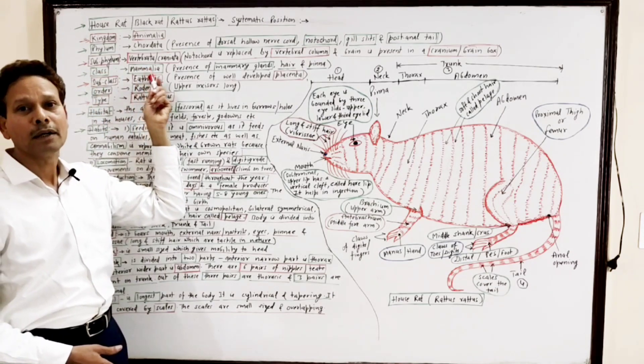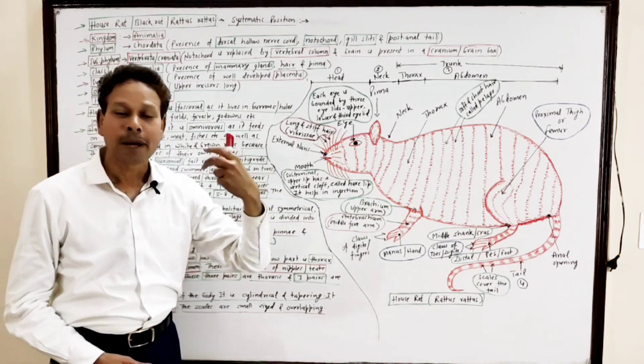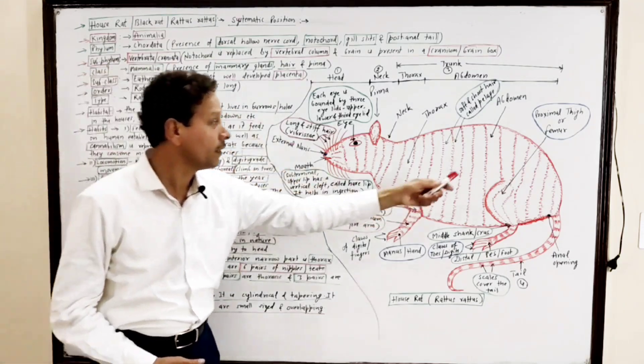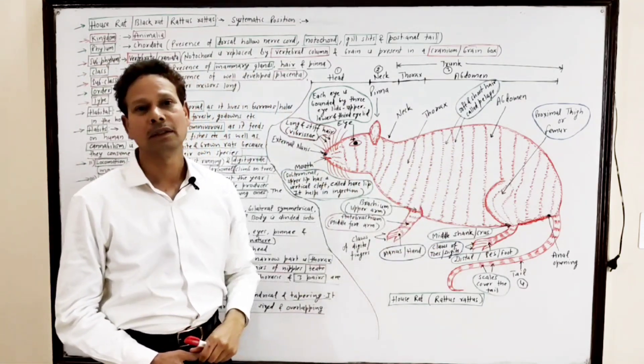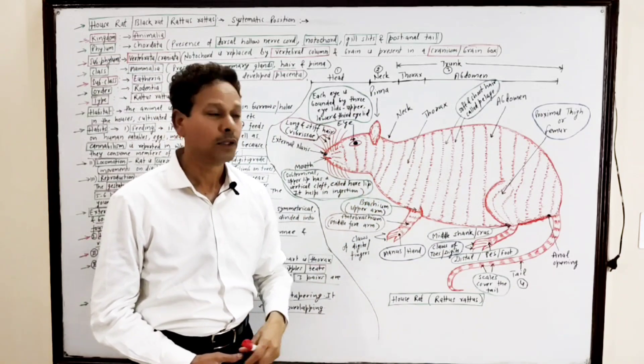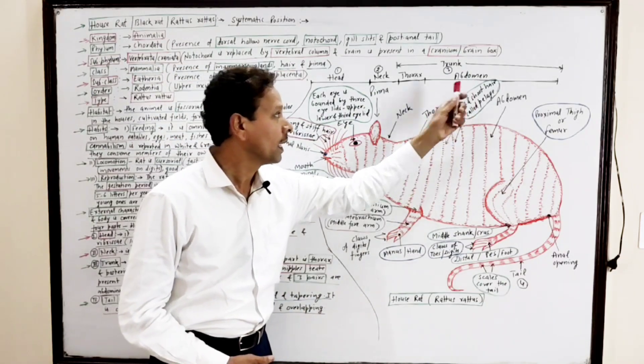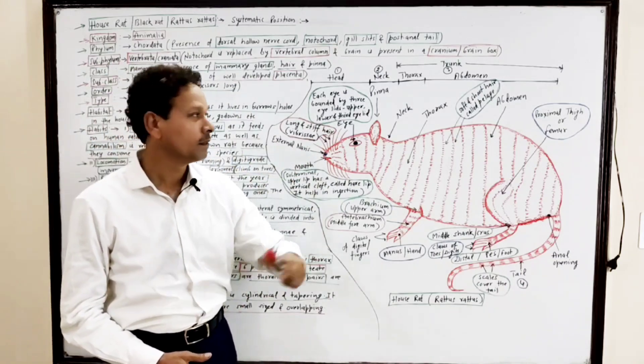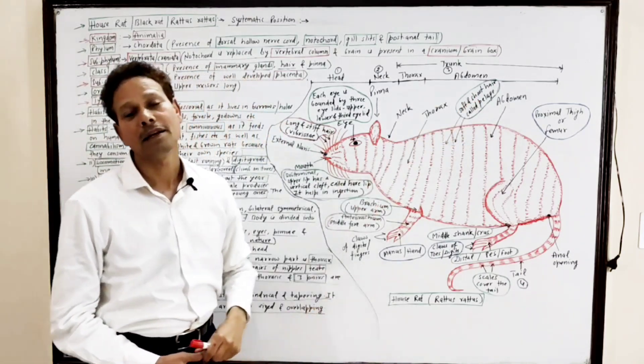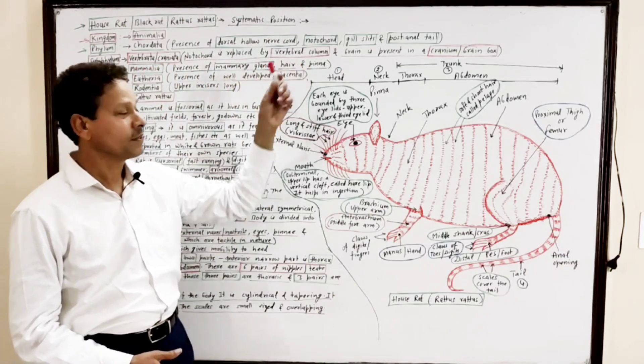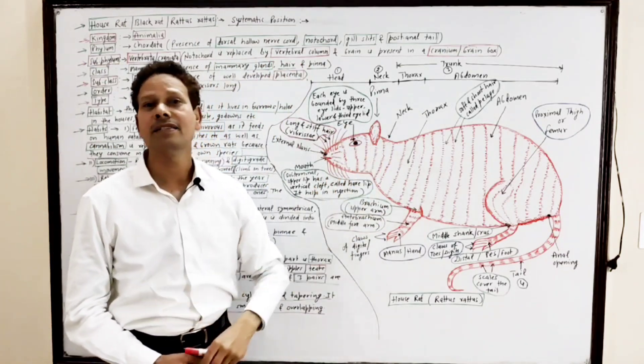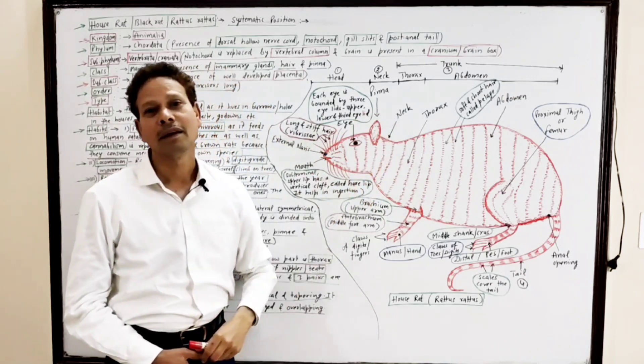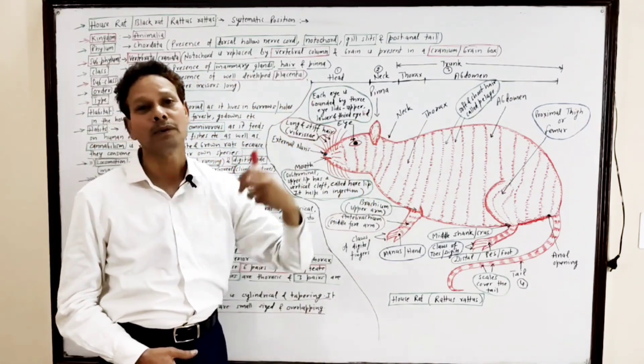Class Mammalia means presence of mammary glands. The entire body of rat is covered by soft and short hair, the pelage. As well as on head region, external ear, pinna, which receives sound waves.